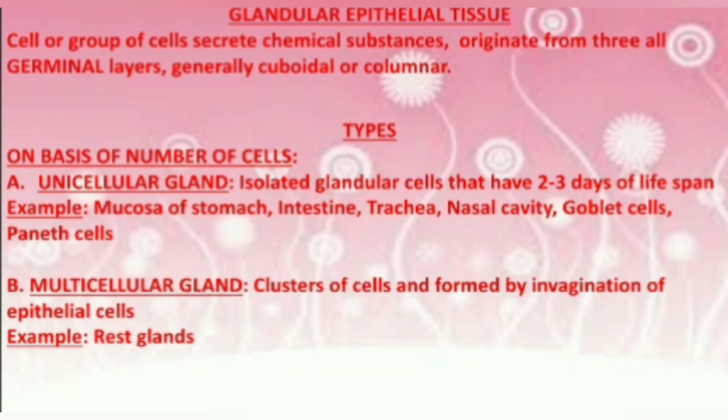Now let's move on to glandular epithelial tissue. These are groups of cells that secrete chemical substances and originate from all three germinal layers. They are generally cuboidal or columnar in shape and can be divided into many types according to their functions.